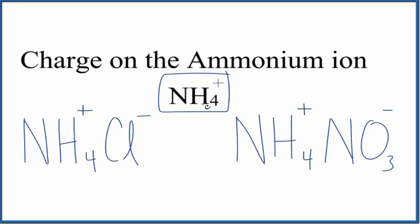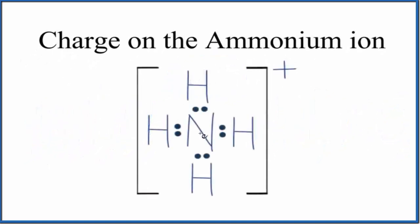We could also look at the formal charge from the Lewis structure here for the ammonium ion to figure out our overall ionic charge on the ion. Let's do that. So this is the Lewis structure for the ammonium ion. If you looked at the formal charges for each element, they'd look like this.